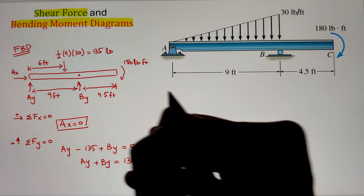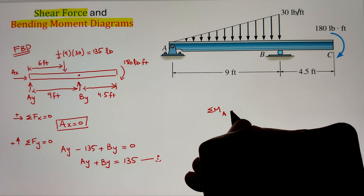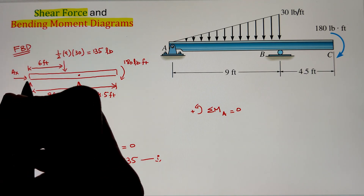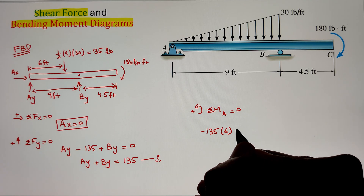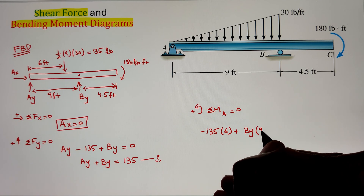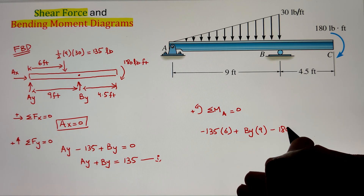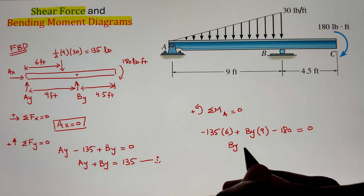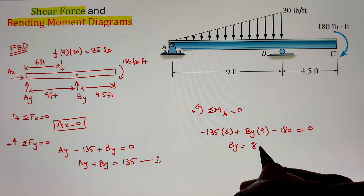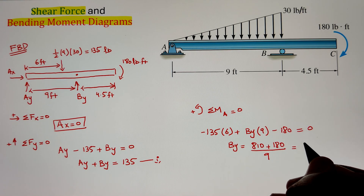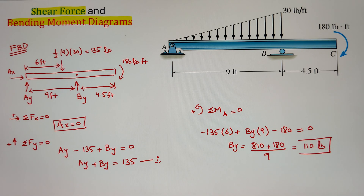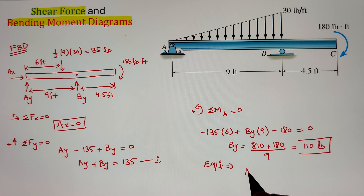We can write our summation of moment, and we can do it at any point on the beam. Typically we pick a point that has the most unknowns so they won't contribute to the moment expression. So, summation of moment at point A equals to zero, taking counterclockwise as positive. We have our point load of 135 pounds making a moment arm of six with respect to point A. Since it is going in the clockwise direction, we take it as negative. Next, we have BY with a moment arm of nine producing a counterclockwise moment, and a couple moment of negative 180 since it is clockwise. Simplifying, we get BY equals 110 pounds. Plugging that into equation one, we solve for AY, which comes to 25 pounds.